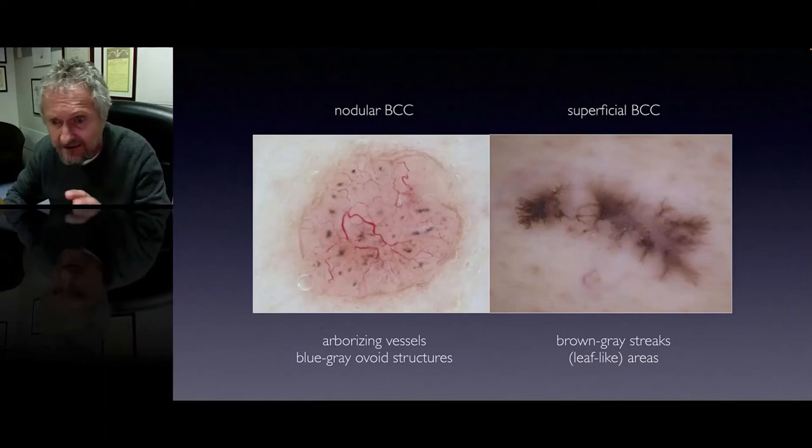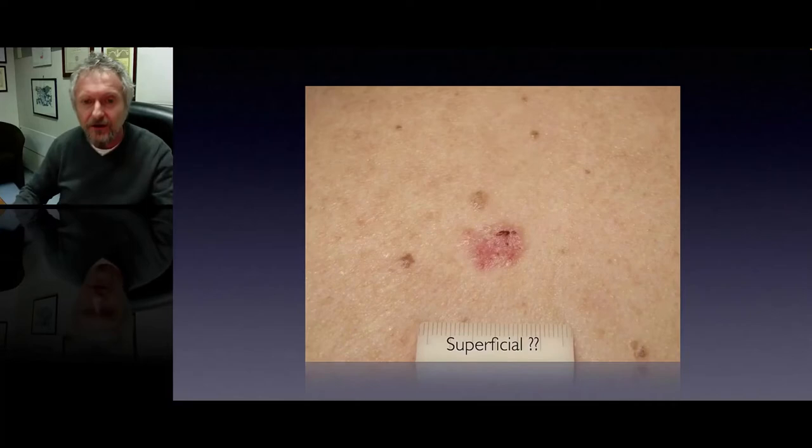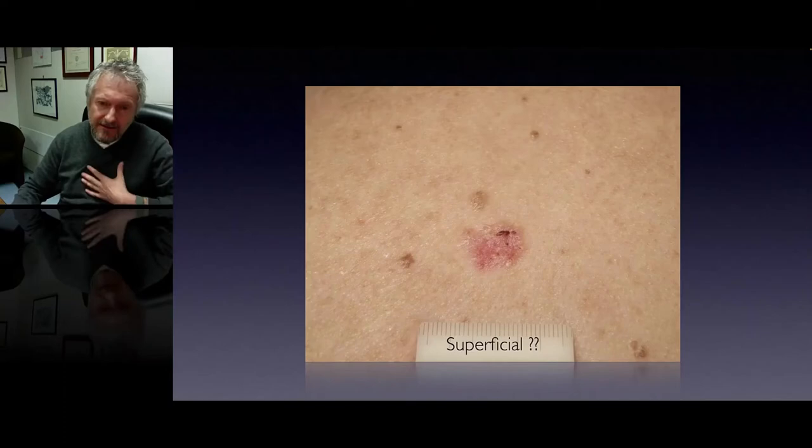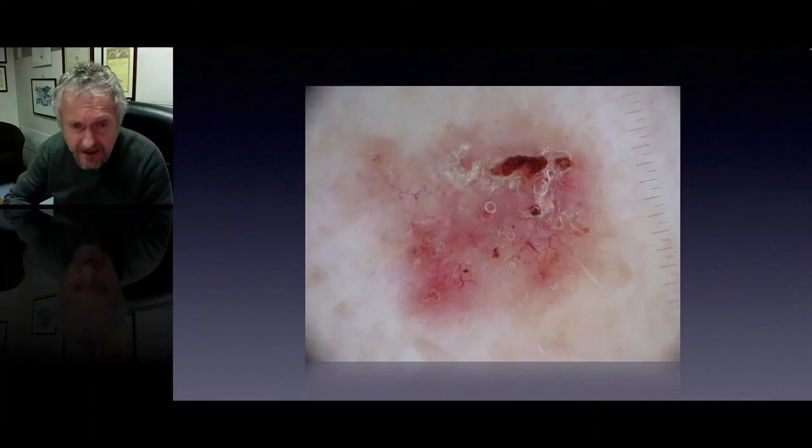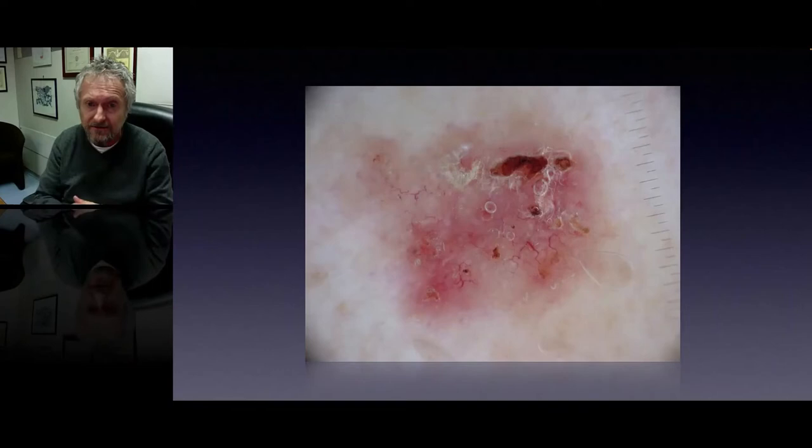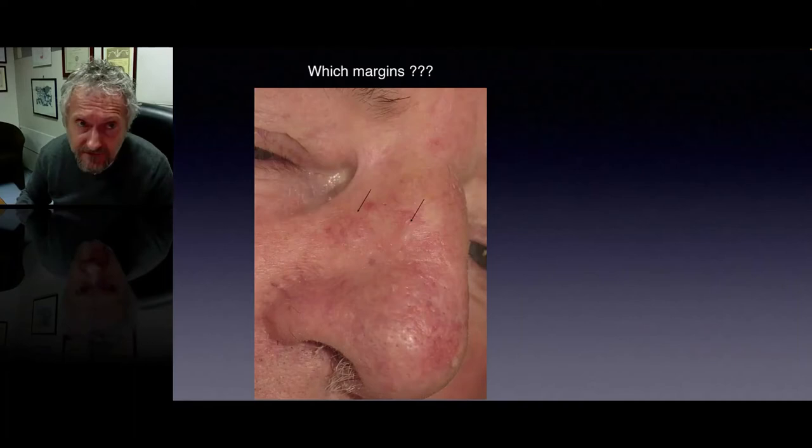What about the clinical recognition of this BCC — is it superficial or infiltrative? In my estimation, clinically it is more of the superficial type, but if we look carefully, in dermoscopy we see large arborizing vessels and bigger ulcerations. Therefore, this could much more easily be an infiltrative type of BCC.